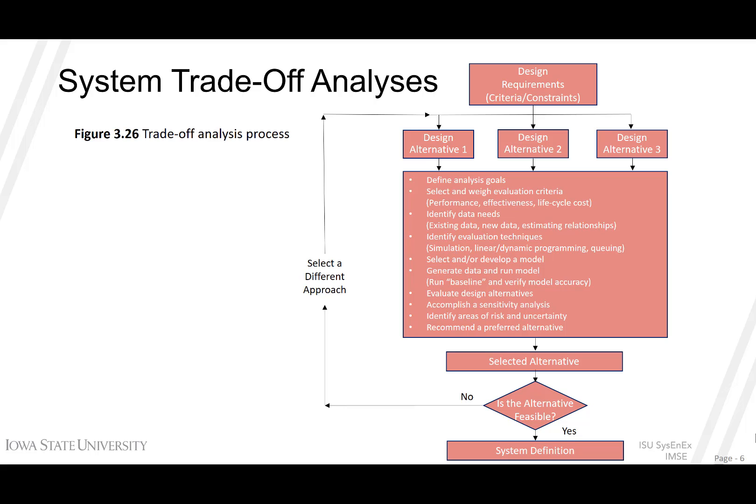Using the airline example, the requirements for fuel efficiency and passenger capacity may not align. Alternates might include reducing passenger space or legroom, carrying less luggage or cargo weight, or using more expensive but lighter materials to reduce weight. All of those may solve the particular problem but might also create other requirements trade-offs in turn.